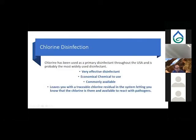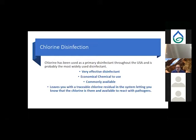Chlorine has been used as the primary disinfectant throughout the United States and is probably the most widely used disinfectant. It's very effective, economical, and readily available. It also leaves a traceable chlorine residual throughout your system, letting you know that chlorine is still present and still able to react with and stop pathogens as water moves through the system.